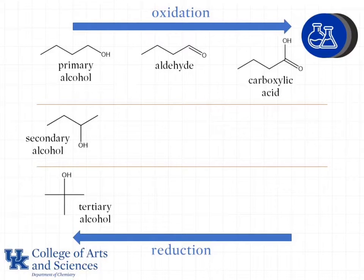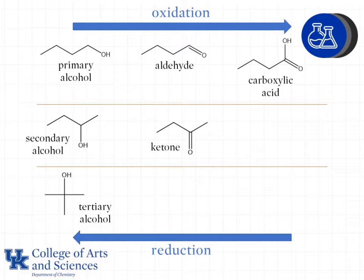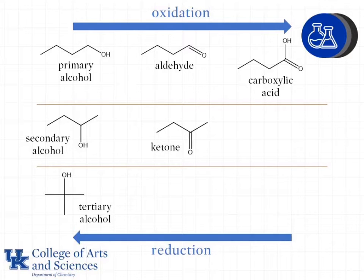A secondary alcohol can also be oxidized to form a carbonyl — a C double bond O. When it's oxidized, we see a ketone. Notice that the position of the OH and the double bond O groups are the same along the carbon chain; the thing that has changed is the number of bonds to oxygen. So a secondary alcohol can be oxidized to a ketone, and a ketone can be reduced to a secondary alcohol.